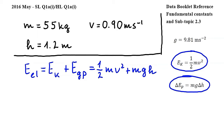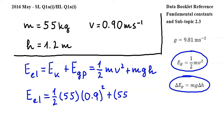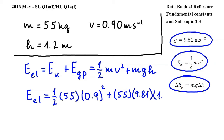Notice that instead of delta H, I'm simply using H. Substituting, we get EEL is equal to 1.5 times 55 times 0.9 squared, plus 55 times G, which can be found in the fundamental constant section of the data booklet, and which is equal to 9.81, multiplied by 1.2. Carrying out this calculation gives us approximately 669.7 J, which is about 670 J, and this is what we wanted to show.